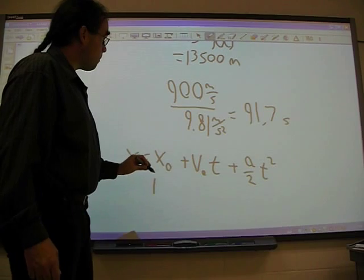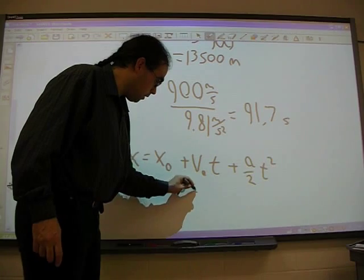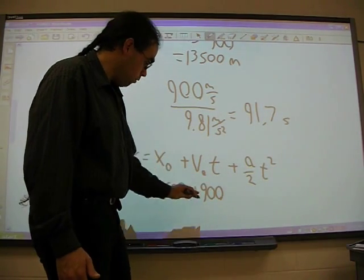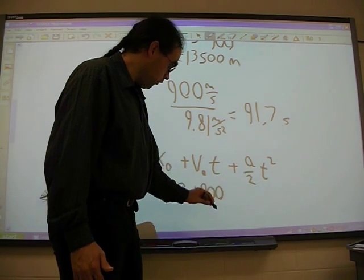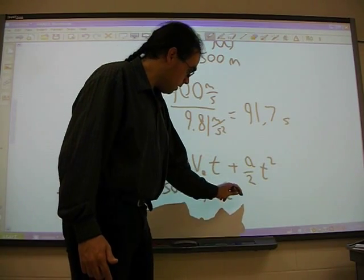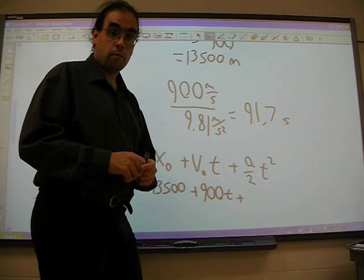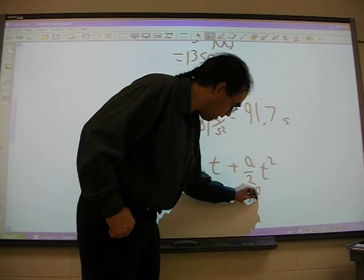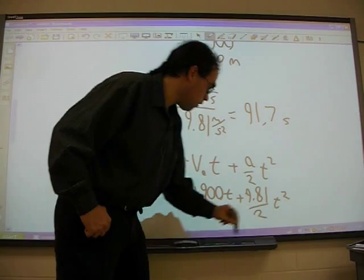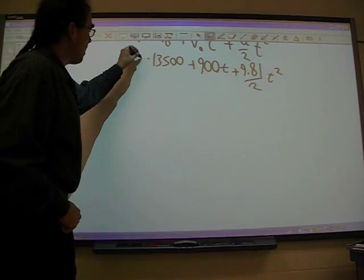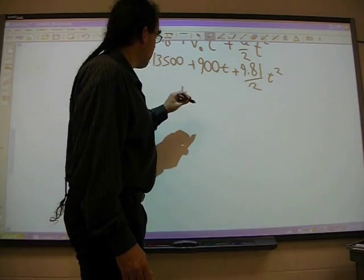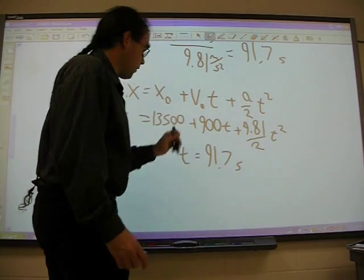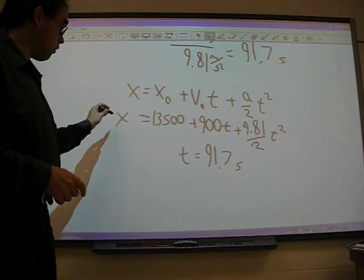X equals X of zero plus V of zero T plus A over two times T squared. This would be the most sophisticated equation in the whole problem. We have our initial offset here. We're at an altitude of 13,500 meters, plus our V of zero. Our V of zero is 900. So we're at the beginning of phase two. We're at 900 meters per second times time. And our acceleration, this time our acceleration is a negative number because we're accelerating back down towards Earth. That's 9.81 divided by two, 9.81 divided by two T squared.